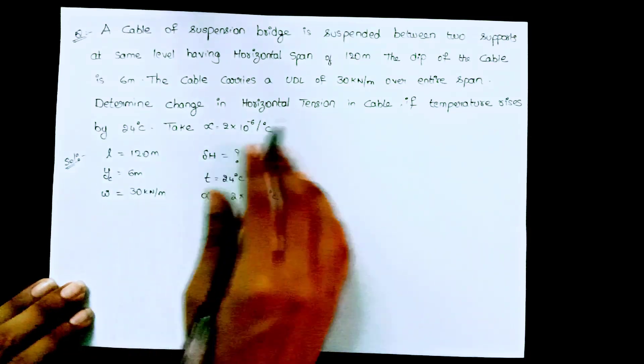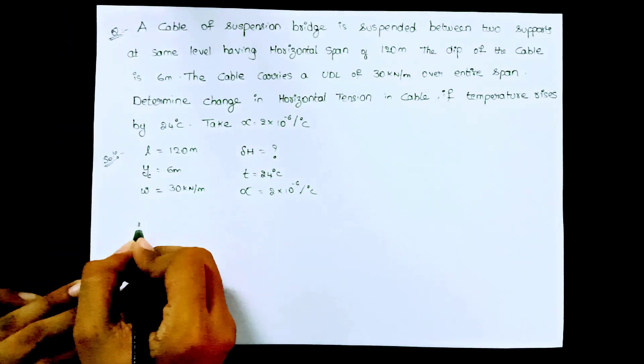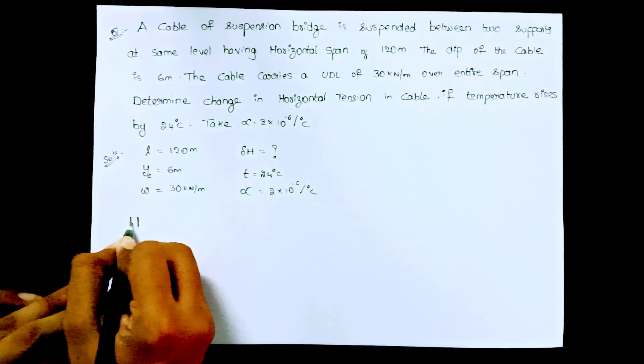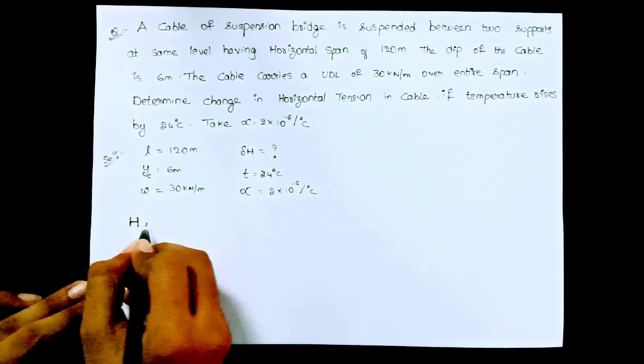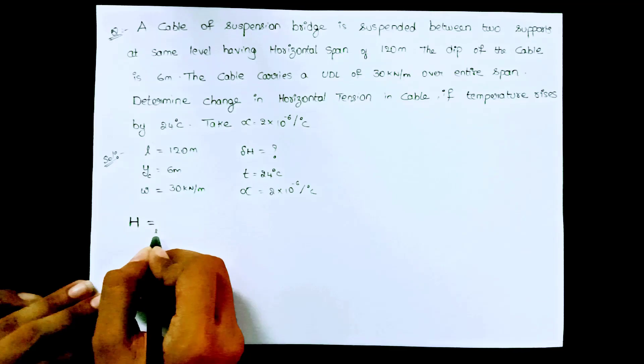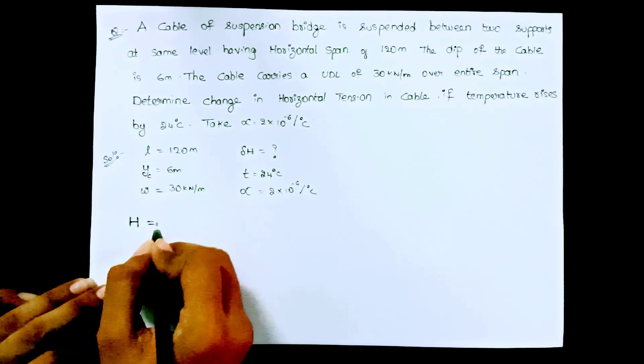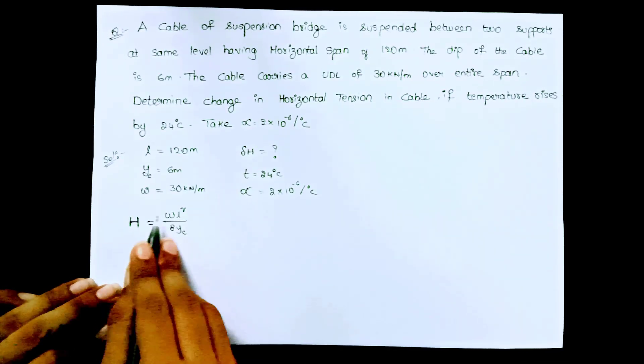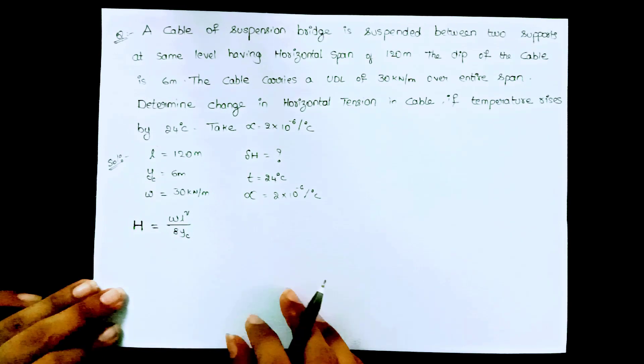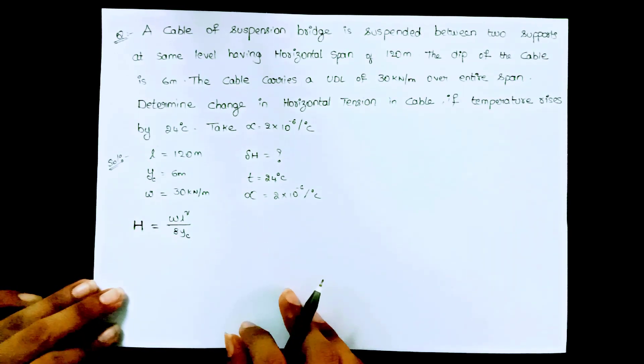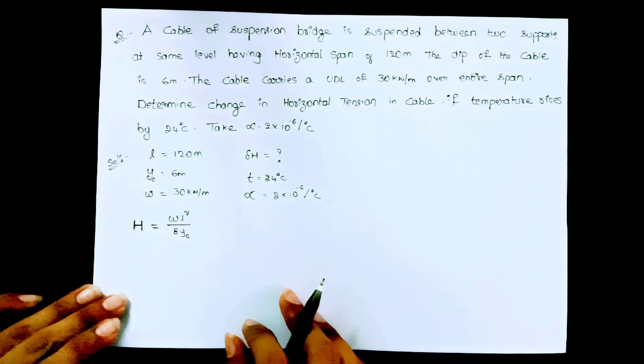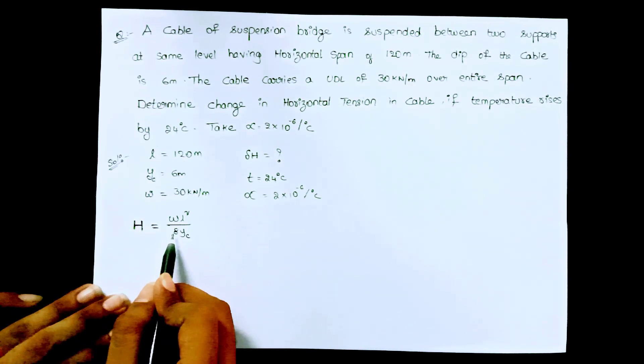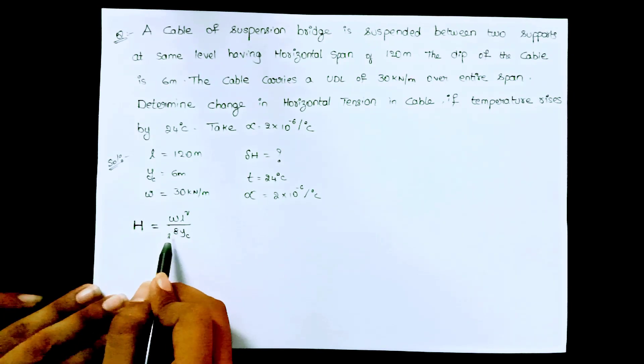Now we have to calculate the change in horizontal tension. Before we calculate the change in horizontal tension, first of all we have to calculate the horizontal reaction or the horizontal tension, that means h equal to, when the supports are at same level, it is w l square by 8 yc. I have explained this derivation in my introduction video. If you haven't watched that video the link will be given in the description. This is the formula for cable having supports at same level and also subjected to UDL over entire span.